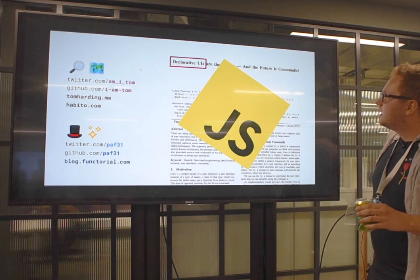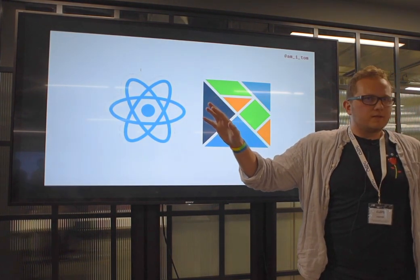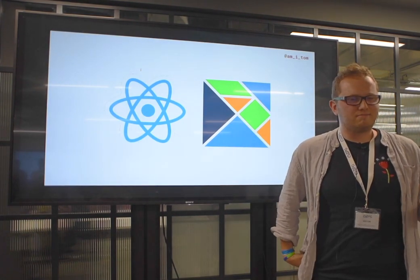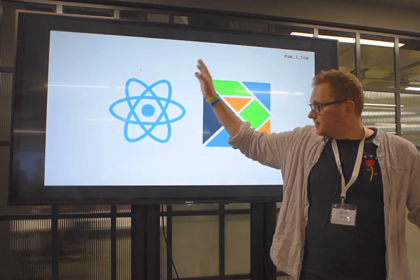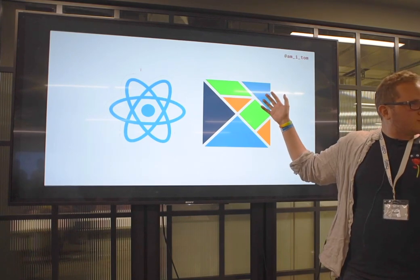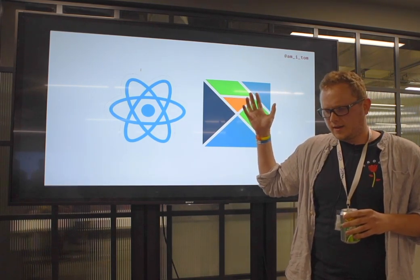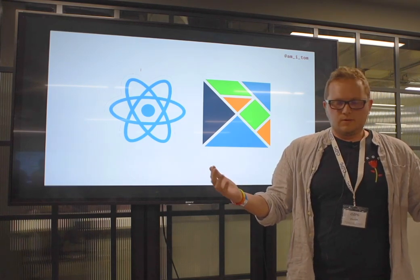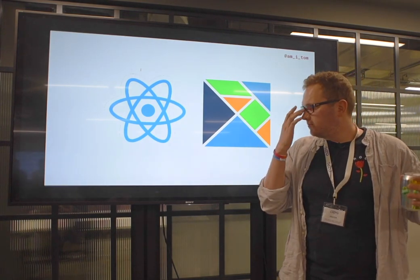So what's a declarative UI? Who works with front-end at all? I did a similar talk at a Haskell meetup and no one knew what I was talking about. Who recognizes this logo? Everyone familiar? This is React — a Facebook project, supremely popular. And this is Elm. The reason I put these two up is because they are the de facto declarative UI frameworks we use to express the idea of the virtual DOM.